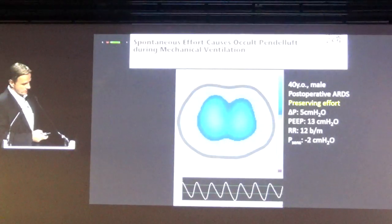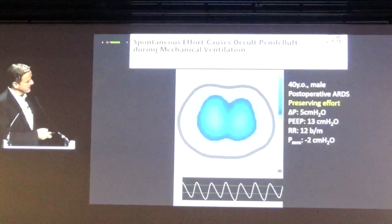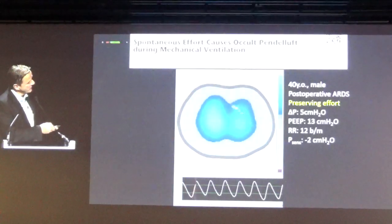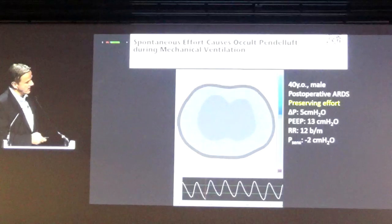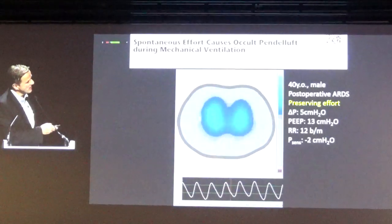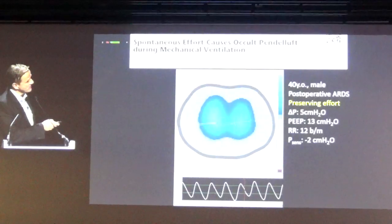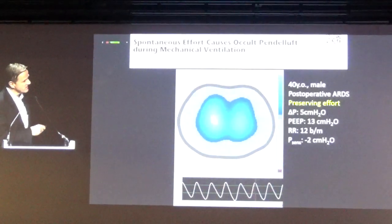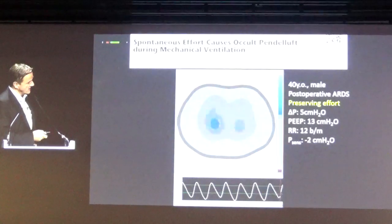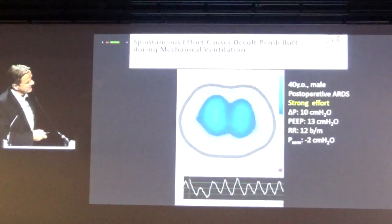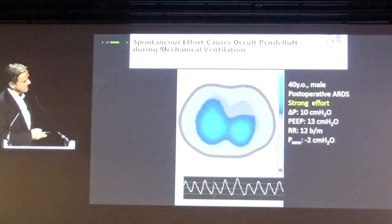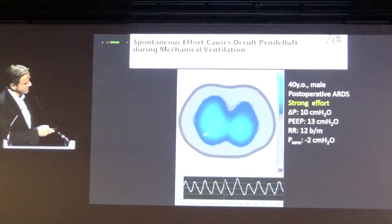Five years ago, we were monitoring patients at the Heart Institute at my university. This is the typical scenario of a patient under pressure-controlled ventilation. When I see this EIT image — homogeneous inflation, well-balanced distribution of ventilation — I know the patient has the right amount of PEEP and the lung is in good shape. I was comfortable with this image. But I was surprised to see, a few minutes later, that the patient was doing something completely different.